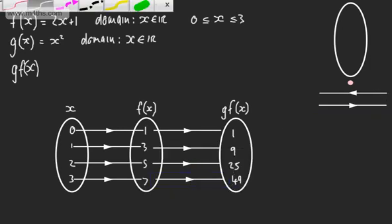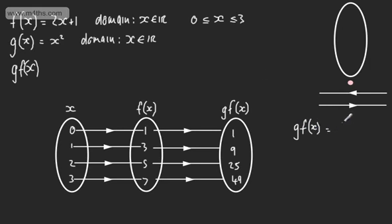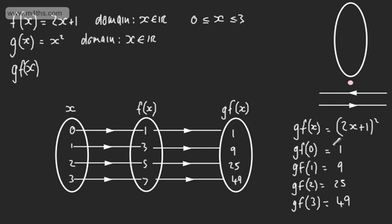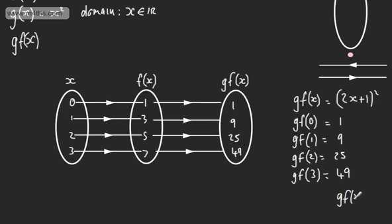We know g of f of x = (2x + 1)². So g of f of 0: 2(0)+1=1, 1²=1. g of f of 1: 2(1)+1=3, 3²=9. g of f of 2: 2(2)+1=5, 5²=25. g of f of 3: 2(3)+1=7, 7²=49. These correspond to the values we mapped earlier. So the range of g of f of x is 1 to 49.